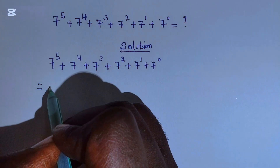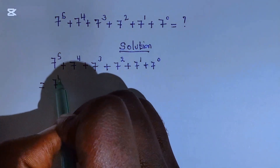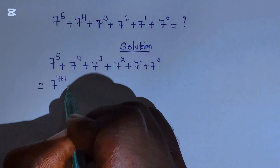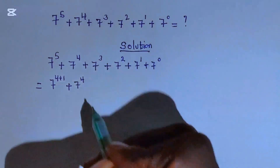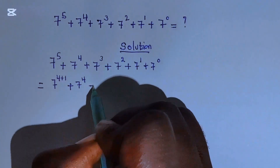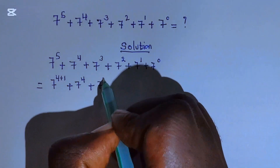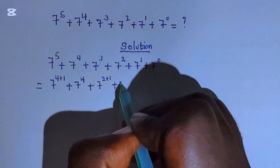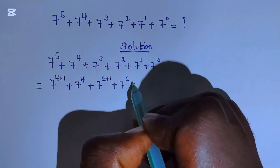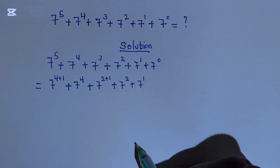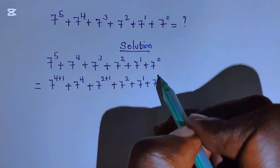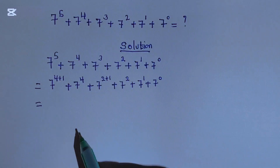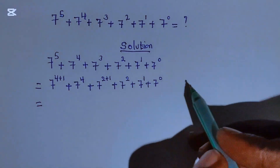Okay, this will be equal to 7 to the power of 4 plus 1, which equals 2, plus 7 to the power of 4. And this one can be written as 7 to the power of 2 plus 1, then plus 7 squared, plus 7 to the power 1, plus 7 to the power of 0. So this is equal to — and we can use this law of indices.